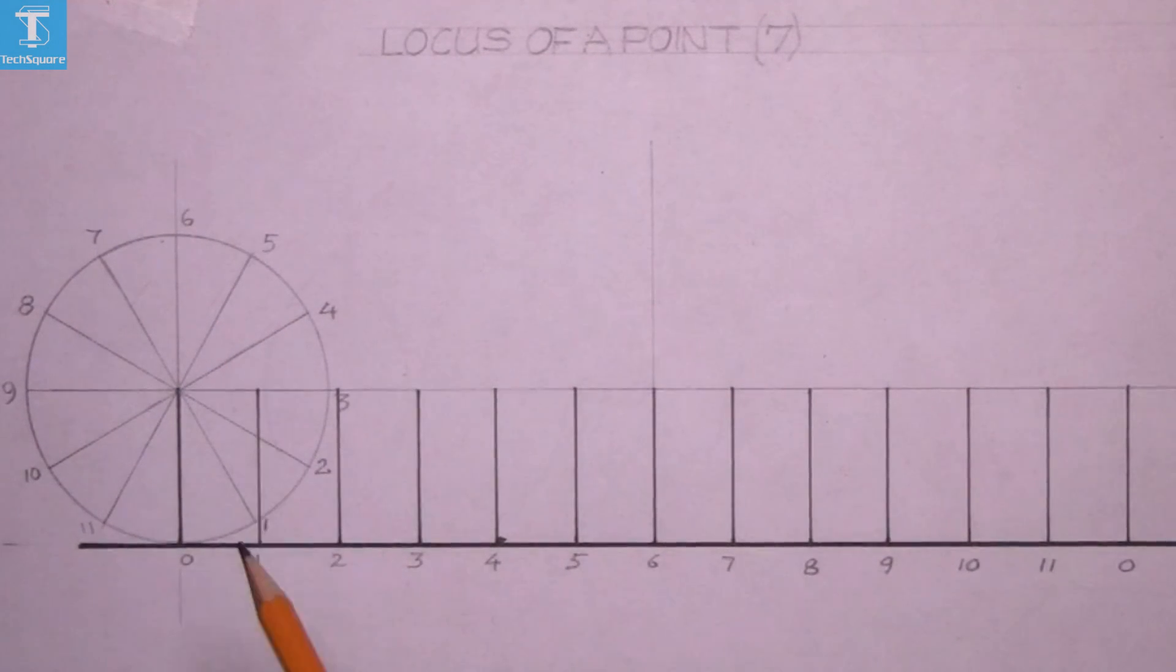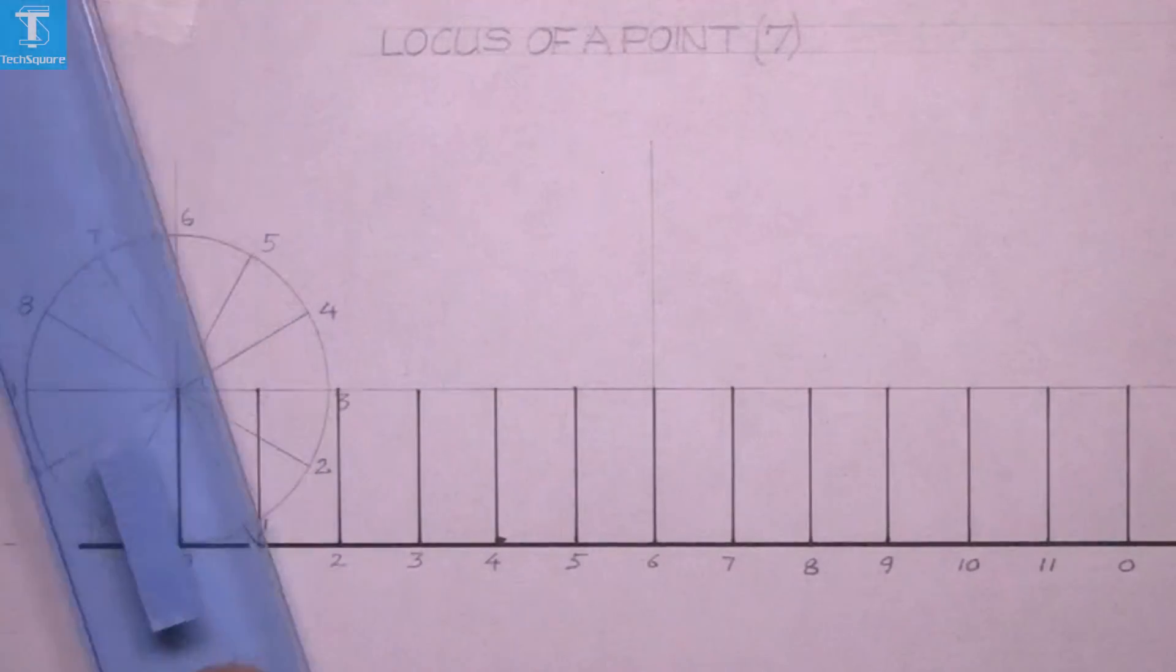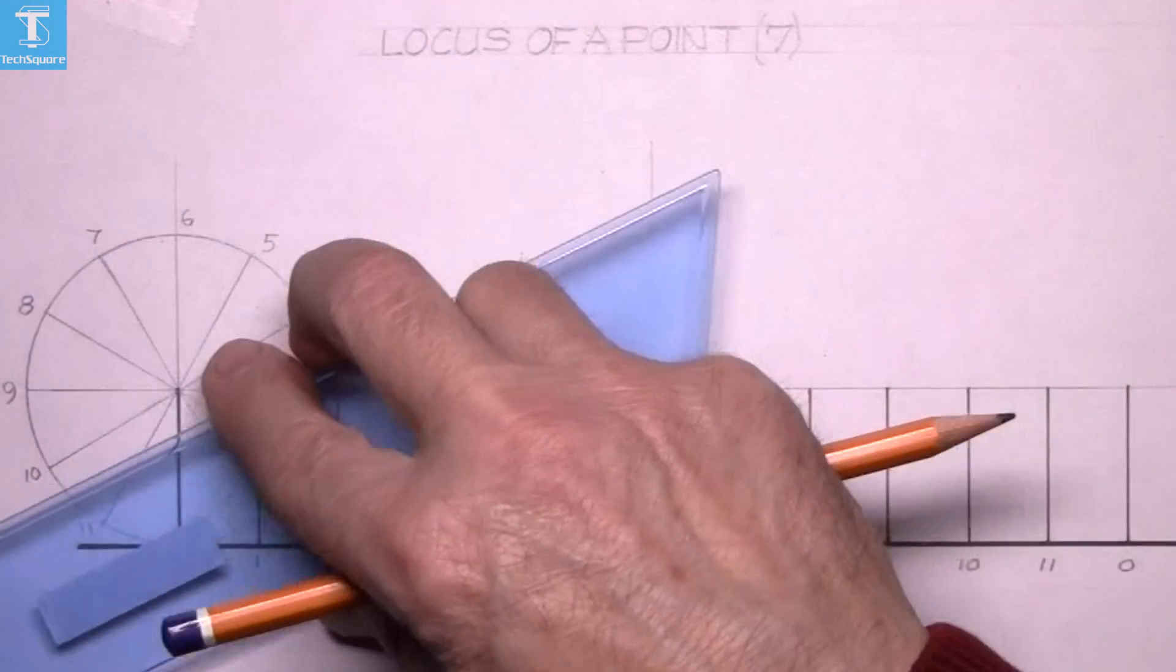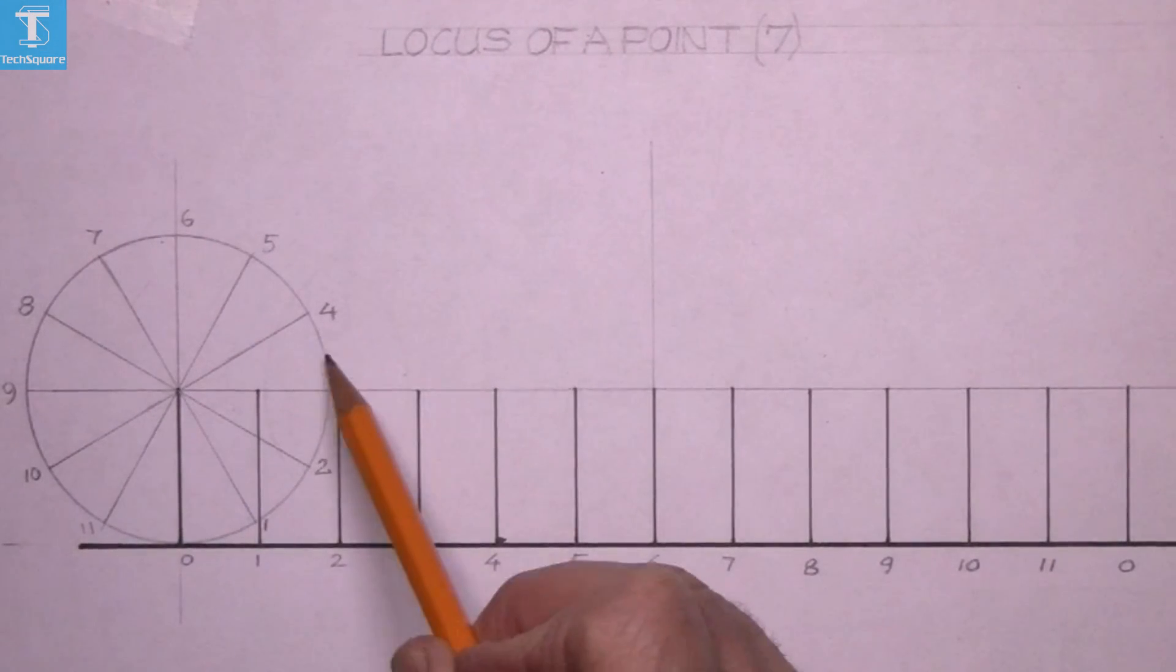The circle is divided up into twelve equal parts using a sixty-degree set square. At sixty degrees and then at thirty degrees, that gives you the circle divided up into twelve equal parts.